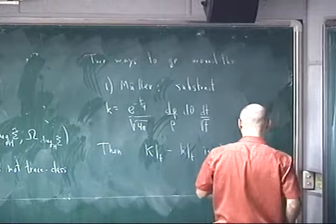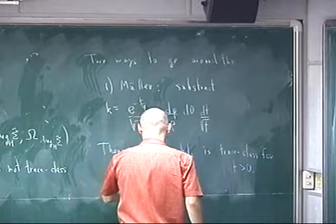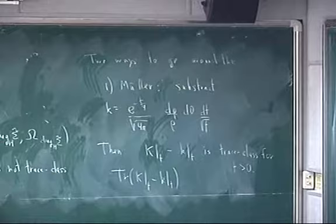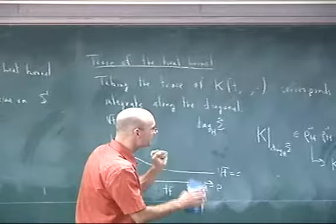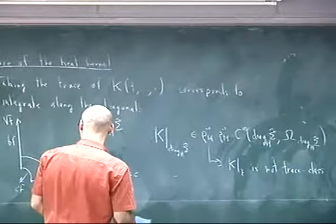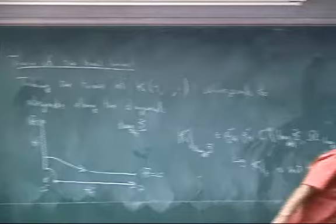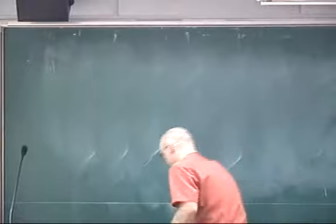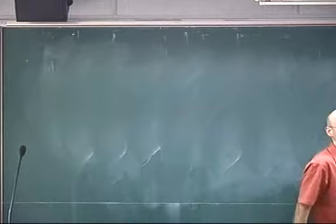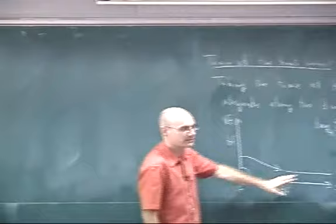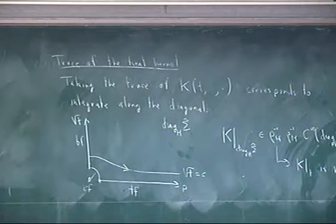Without entering into detail on how to define k globally on the surface, what you have is that k restricted to t minus little k restricted to some value of t is trace class for positive t. So you can take the trace of this operator. And so I want to describe how the logarithmic term arrives in the short-time asymptotic of the trace in this context — it will come precisely from this corner, and it's really subtracting this that creates the logarithmic term.